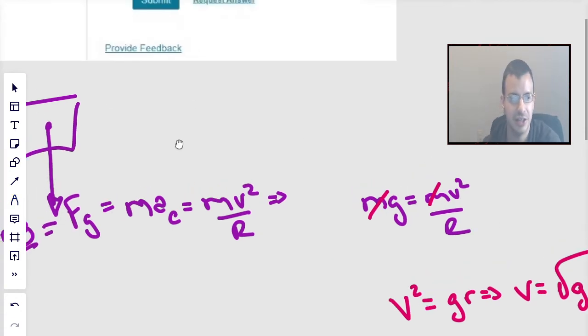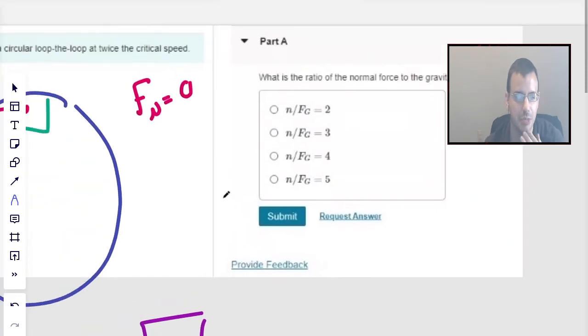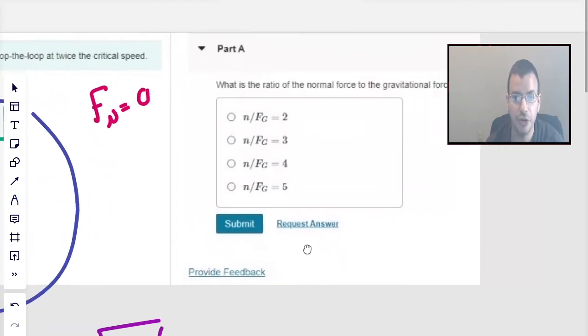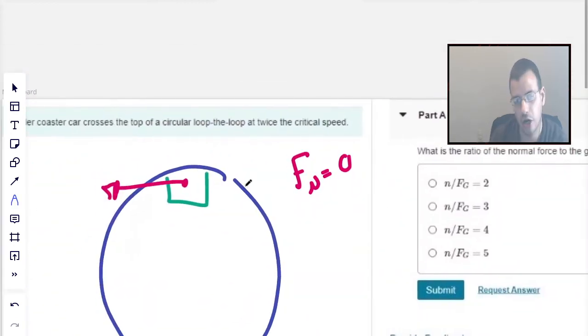r is radius. I know sometimes we use a big r, sometimes we use a small, doesn't matter. Same idea. So we want to know the ratio of the normal force to gravity when we are twice the critical speed.